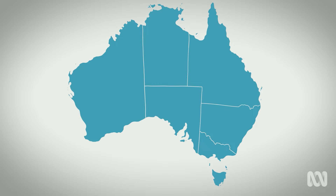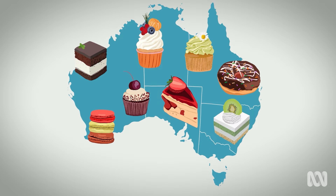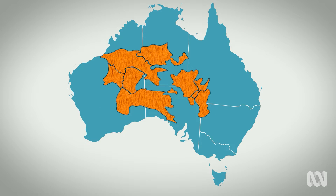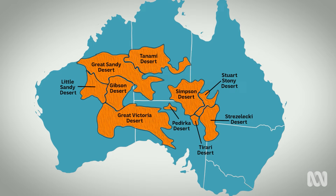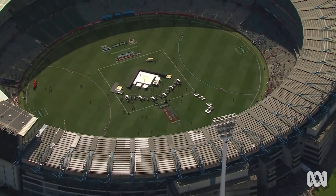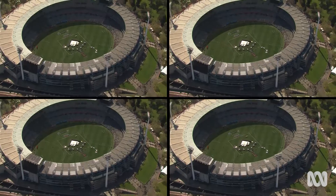How many deserts do you think Australia has? You might have heard of the Great Sandy Desert or the Simpson Desert. Well, within the arid desert region of Australia, there are 10 officially named deserts. The biggest desert in Australia is the Great Victoria Desert, followed by the Great Sandy Desert and the Tanami Desert, and then there are all these other ones. These deserts make up about 18 per cent of the entire land mass of Australia. That's equivalent to over 62 million football fields the size of the MCG. Amazing!